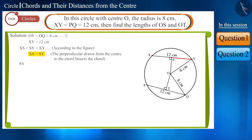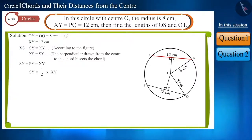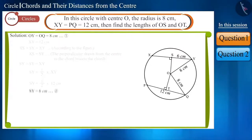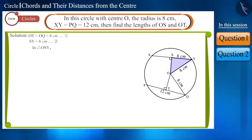We know that the perpendicular drawn from the center of the circle to the chord bisects the chord. So XS and SY will be equal. This means SY will be equal to 1/2 of XY, from which we obtain SY as 6 cm.